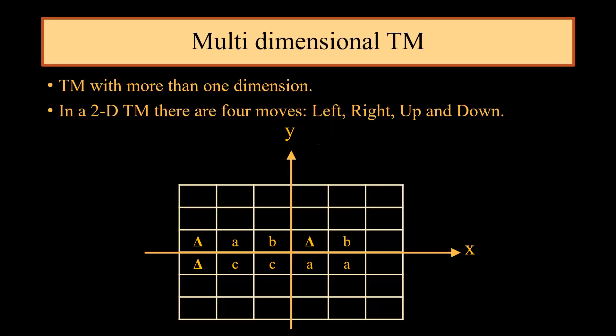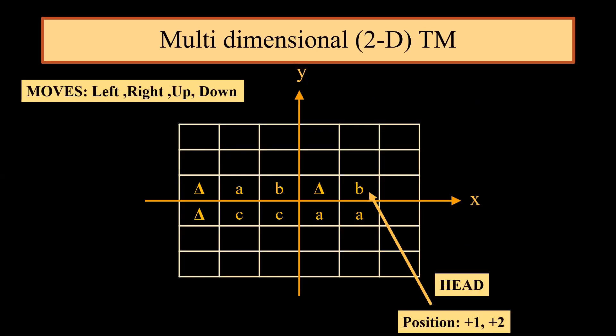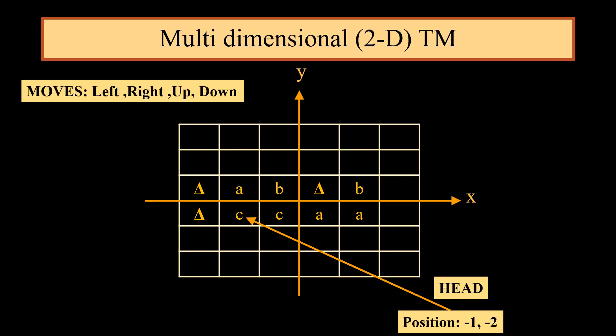Next we come to multi-dimensional Turing machine. Turing machine with more than one dimension is called multi-dimensional Turing machine. Here we are considering a two-dimensional Turing machine. In 2D Turing machine we will have four moves: left, right, up, and down. In multi-dimensional Turing machine the head position +1, +2 indicates that it is moving two cells from origin towards x-axis and one cell from origin towards y-axis. Likewise, if we say -1, -2, that means right now the head is in the left side of x and y-axis.